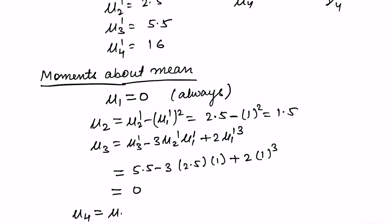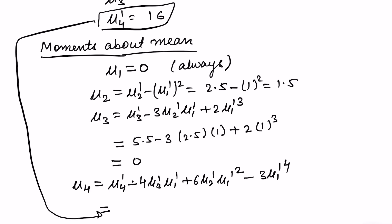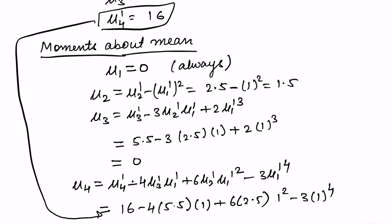For mu 4, the relation is mu 4 dash minus 4 times mu 3 dash times mu 1 dash plus 6 times mu 2 dash times mu 1 dash squared, minus 3 times mu 1 dash to the power 4. Please go through the previous video where we derived this. Substituting: 16 minus 4 times 5.5 times 1, plus 6 times 2.5 times 1 squared, minus 3 times 1 to the power 4. This comes out to be 6.